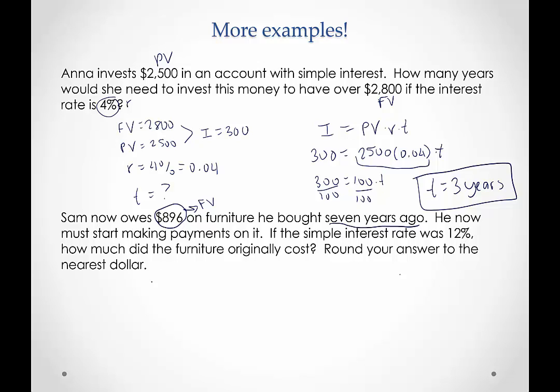So in this one, let's label what we know. We have a future value of $896. We have a present value that's unknown. We also don't know the interest, the amount of interest that was accrued, nor does it ask for that. So I don't think we're going to be using the interest formula here. The interest rate was 12%, which we want to convert to 0.12. And the time was seven years ago when he bought the furniture.